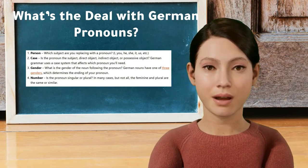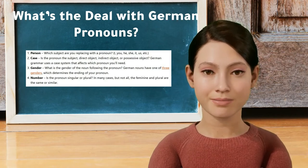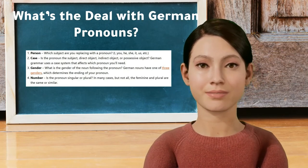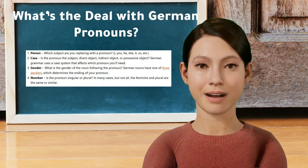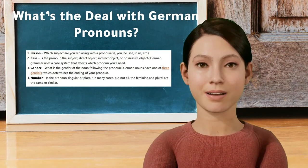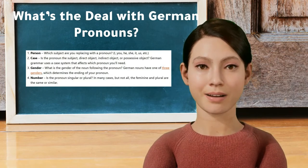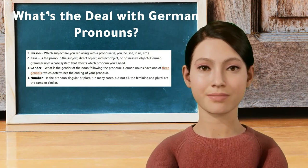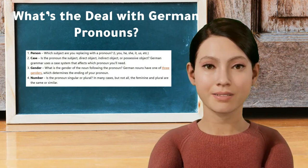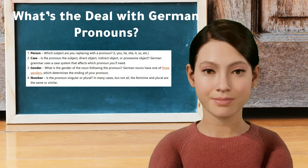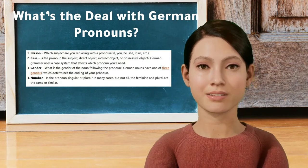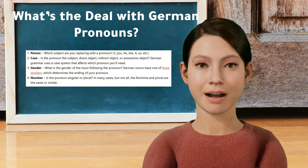First is the person — which subject are you replacing with a pronoun? I, you, he, she, it, us. Next is the case — is the pronoun the subject, direct object, indirect object, or possessive object? German grammar uses a case system that affects which pronoun you'll need. Next is the gender — what is the gender of the noun following the pronoun? German nouns have one of three genders, which determines the ending of your pronoun. Finally, the number — is the pronoun singular or plural? In some cases, but not all, the feminine and plural are the same or similar.